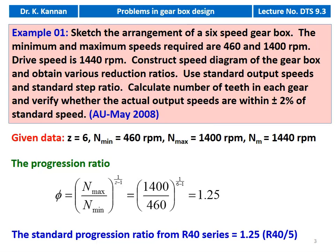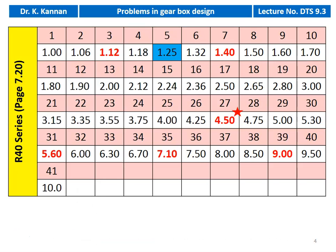This is the R40 series. The preferred number table is available on page number 7.20. There are 40 values in the R40 series. The values start from 1.00, 1.06, 1.12 and go like that, ending with 10.0.